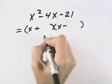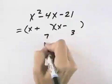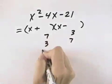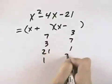We need the product of the last term to be 21, which might be 7 and 3, might be 3 times 7, might be 21 times 1, or 1 times 21.